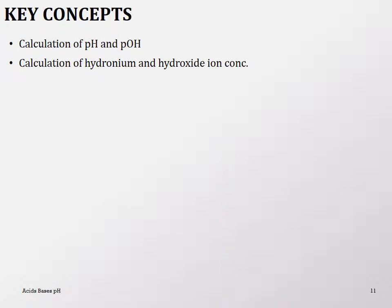The key concepts to take away: be able to calculate pH and pOH, and do the reverse calculations to find hydronium and hydroxide ion concentrations. Also remember that I can give you pH and ask you to calculate pOH — for example, given a hydronium ion concentration of 1×10⁻⁶, calculate the pOH — which requires one extra conversion step. Make sure you can do all of these manipulations.